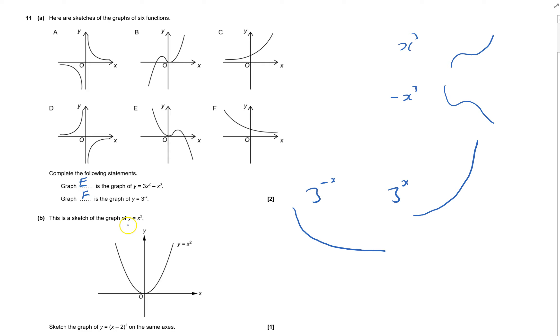All right, given this graph of y equals x squared, you've got to do this y equals x minus 2 all squared on the same axis. And you could just plot them. So you might just know exactly where the graph goes, or you may have to think that if x is 0,